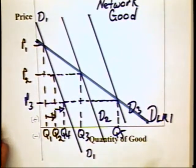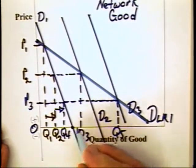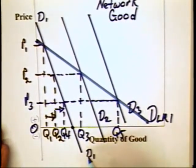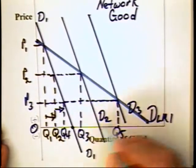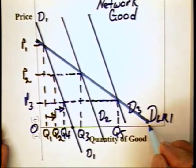Under a network good, it can make sense to, in fact, charge a zero price. Because a zero price can, in fact, lead to a greater quantity being consumed today and, therefore, an even greater quantity in the future.